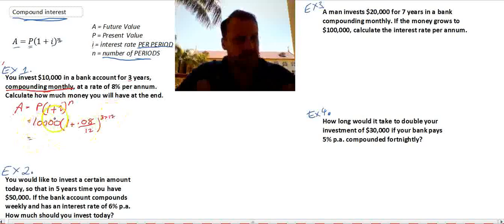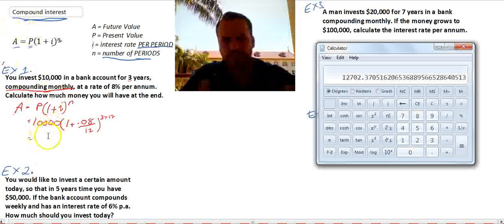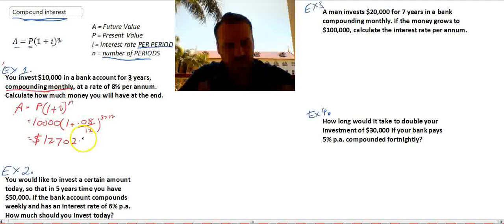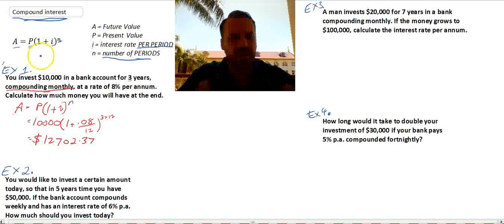So that's it. Just throw it in your calculator and get an answer. And you can see there that we'll end up with $12,702.37. Really straightforward question. Throw it straight into the formula and you get an answer.